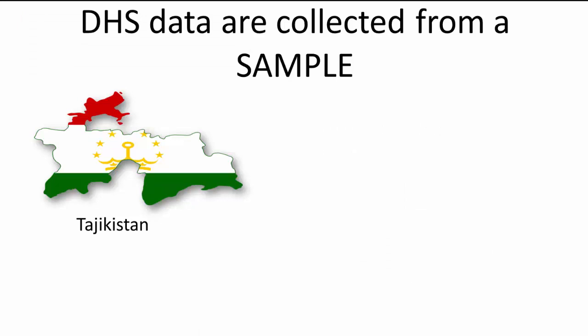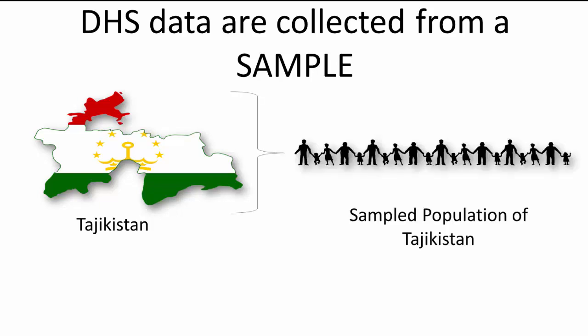The first thing to know about DHS data is that it is collected from a sample of the population, meaning that we do not interview every person in the country like a census does. DHS interviews a portion of the total population, called a sample. DHS samples are chosen to represent the larger population of the country.